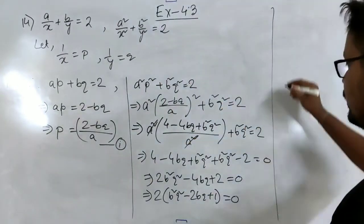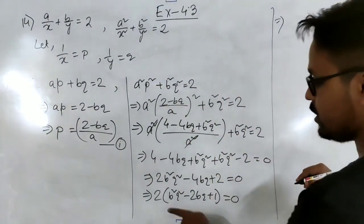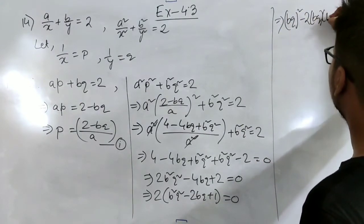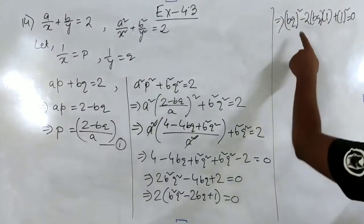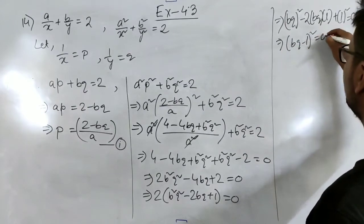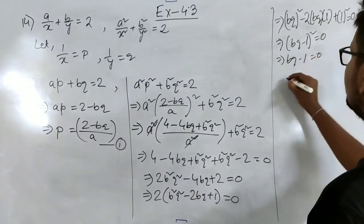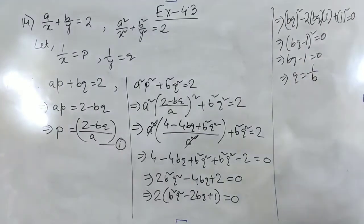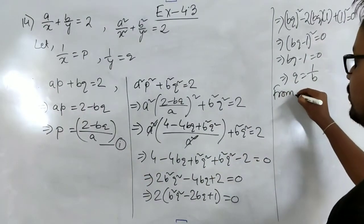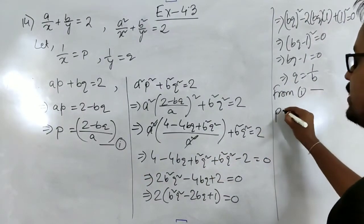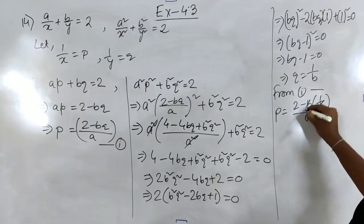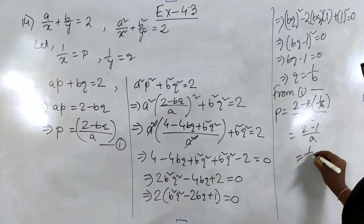We can write this as (bq)² minus 2 times (bq) times 1 plus 1² equal to 0, which is the formula (bq minus 1)² equal to 0. This gives bq minus 1 equal to 0, so q equals 1/b. Substituting back into equation 1: p equals (2 minus b times 1/b) by a, the b's cancel giving (2 minus 1) by a, so p equals 1/a.